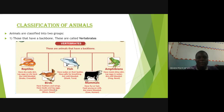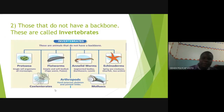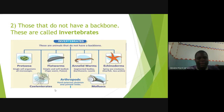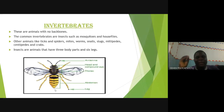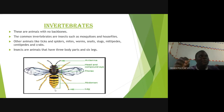Animals that have backbones are called vertebrates. Vertebrates include reptiles, fish, bats, mammals, and amphibians. Animals that have no backbone are called invertebrates. There are so many invertebrates, but in this class we are going to concentrate on the insect part — these animals have no backbones, and the common invertebrates are insects.